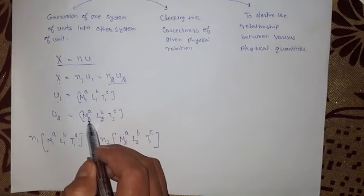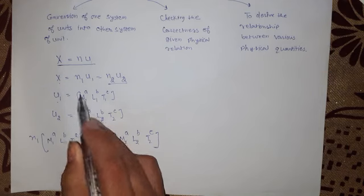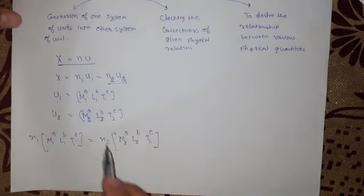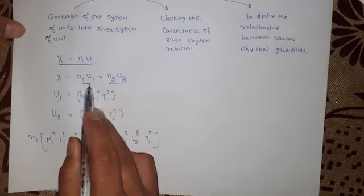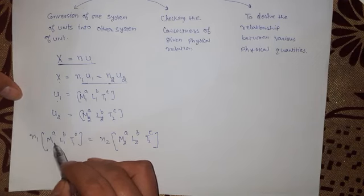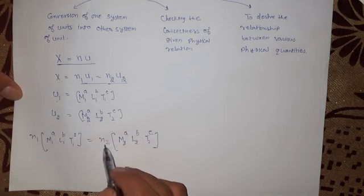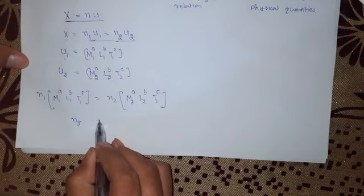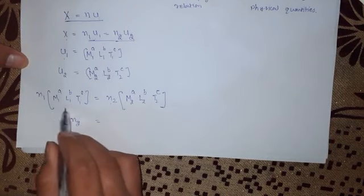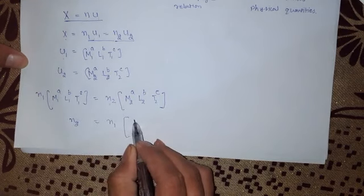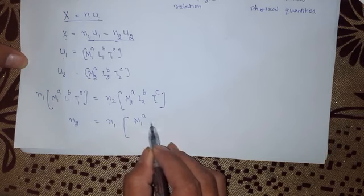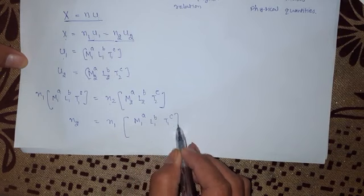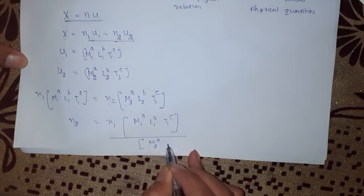In the second system of unit, mass M2 has power a, length L2 has power b, and time T2 has power c. Substituting the values of U1 and U2 into the relation, we get: n1 × [M1^a × L1^b × T1^c] = n2 × [M2^a × L2^b × T2^c].